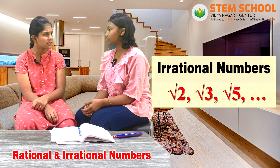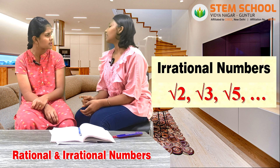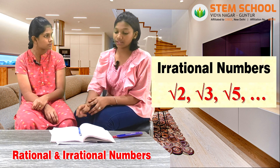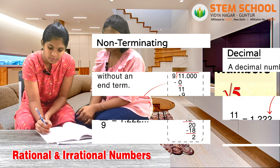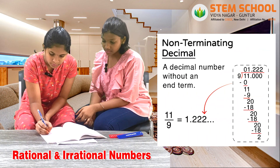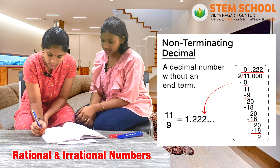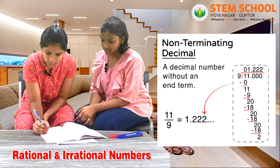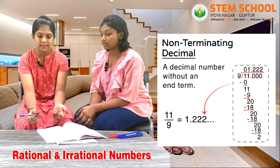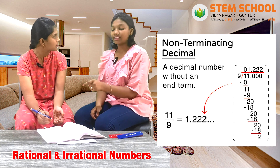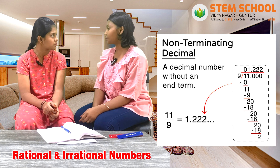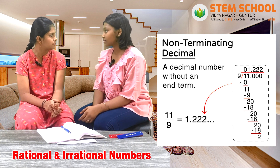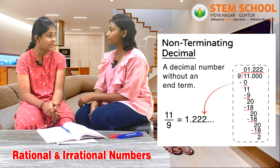What do you mean by non-terminating decimals? Let me tell you, but before that I'll give you something to solve. Here you go. Oh god, this looks like a non-ending decimal. Exactly. This division never ends and the quotient of such divisions are called non-terminating decimals. Now, are you ready for some activity? Activity — yes!